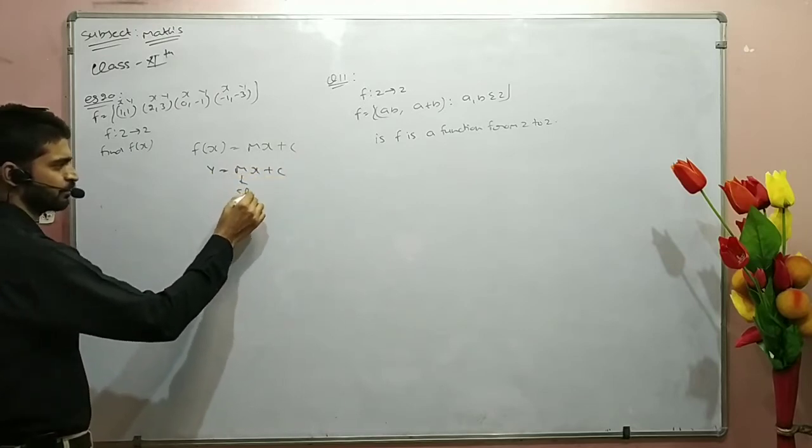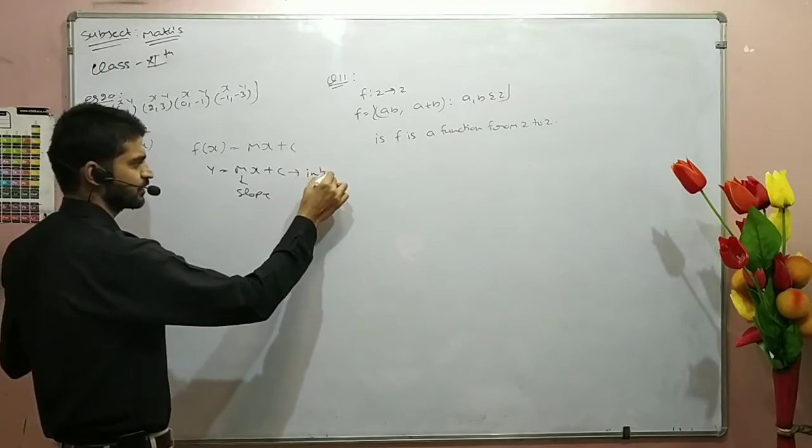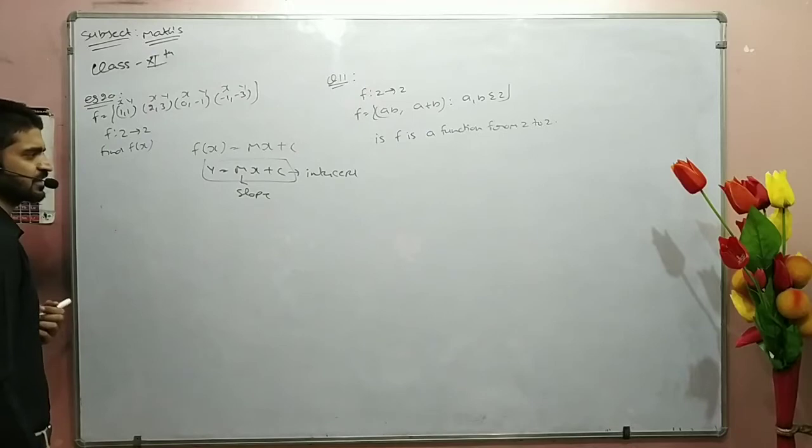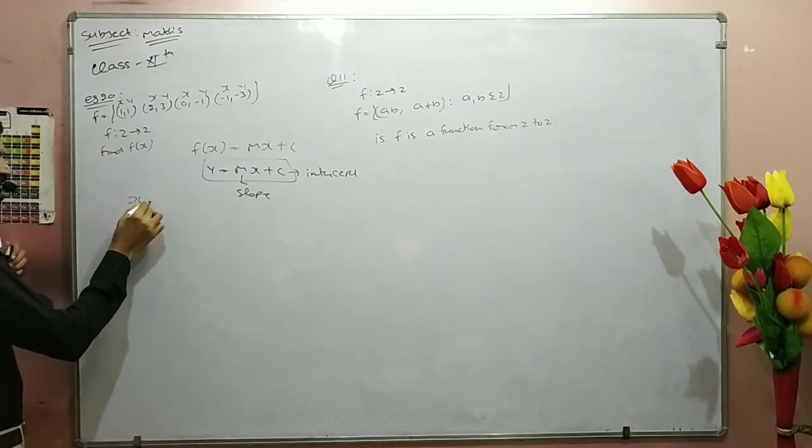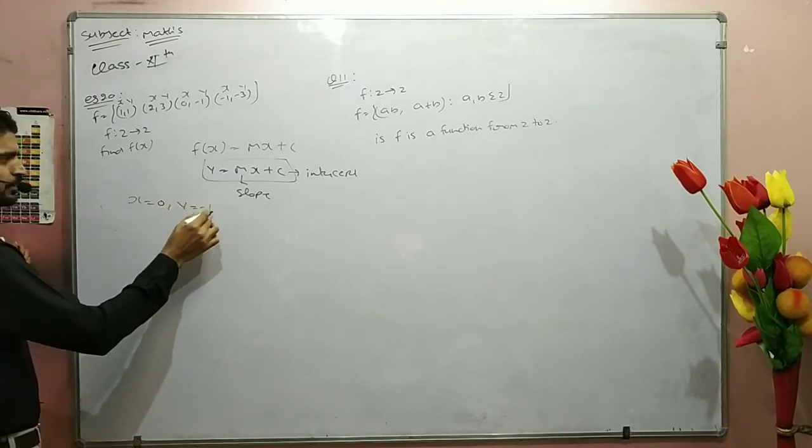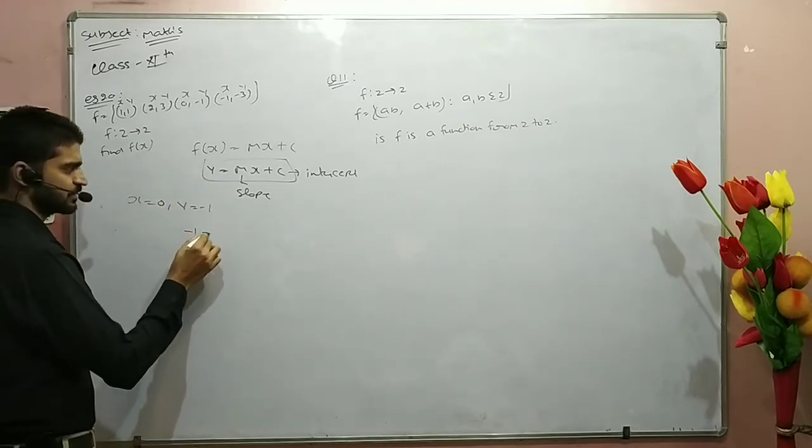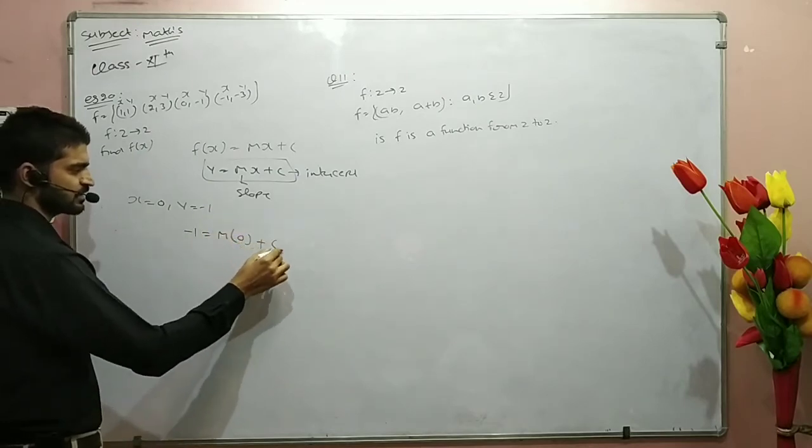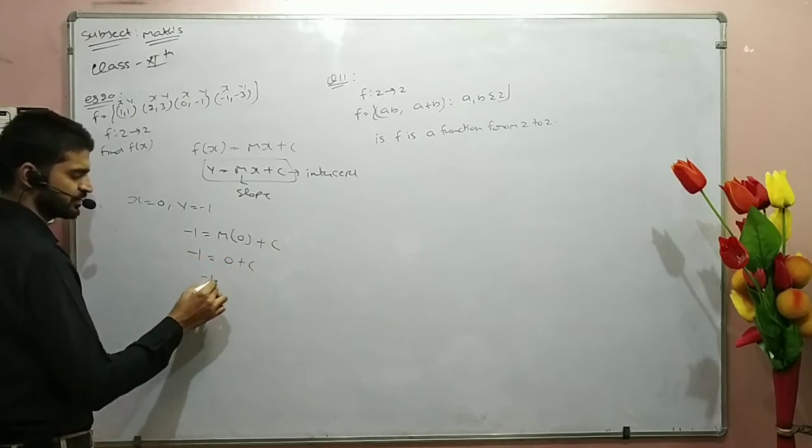You will learn about slope and intercept. Now we are going to put (0, -1). When we put x as 0, we get -1 equals m times 0 plus c. So -1 equals c, therefore c is -1.